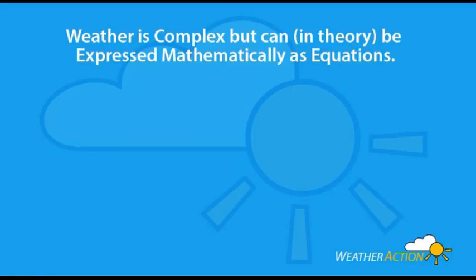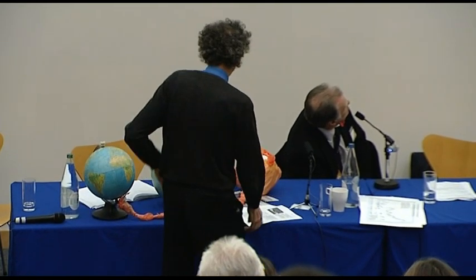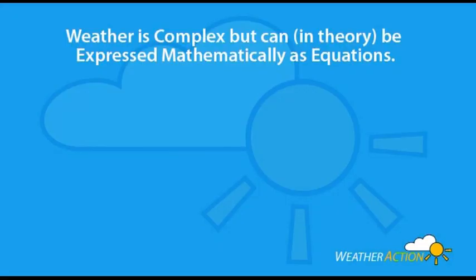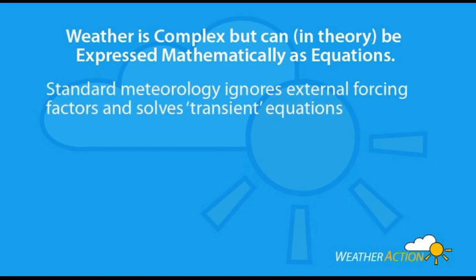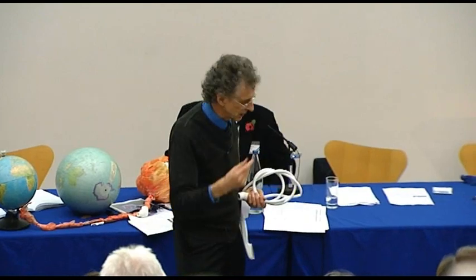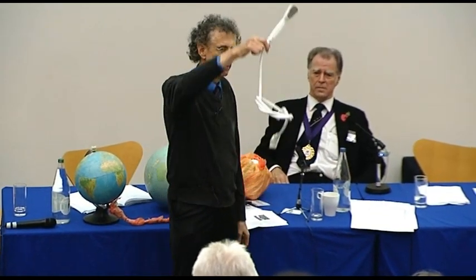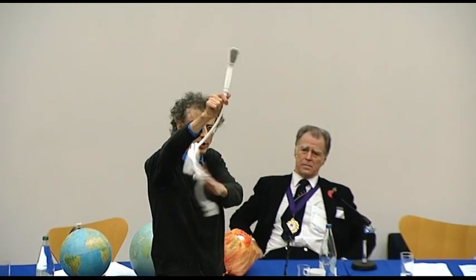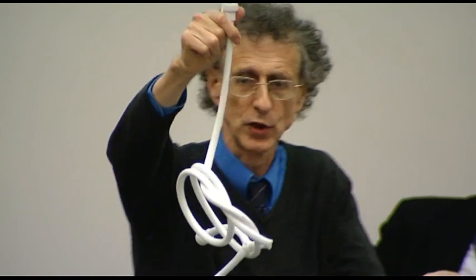We're getting into a situation where we will be able to predict these. The standard majority solves differential equations for the Earth — a closed system where this equals that, this depends on this, and so on. Imagine the Earth's atmosphere as a differential equation: you hit it, something happens, and the standard model predicts what will happen. They can look at the atmosphere now and say it's going to go there — and it does, one, two, or three days ahead. But four days ahead, it doesn't work.